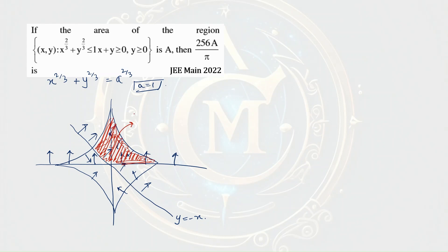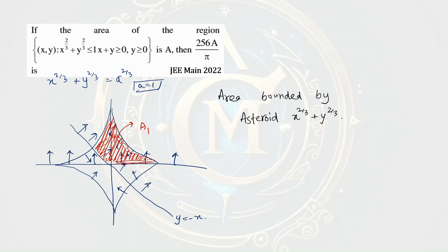Let's say this part is of area a1. We can directly solve this question if we know that the area bounded by the astroid x^(2/3) + y^(2/3) = a^(2/3) is 3πa²/8. This is the key formula to note down.